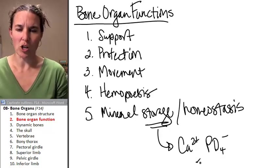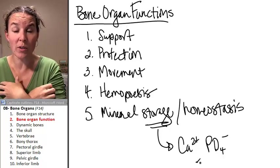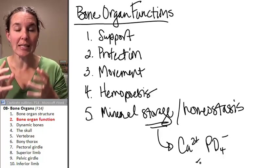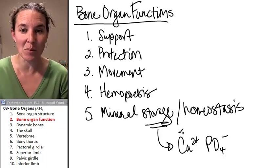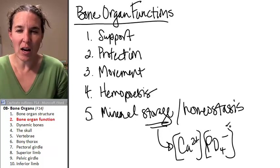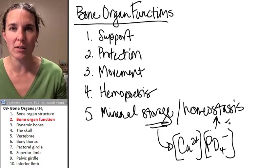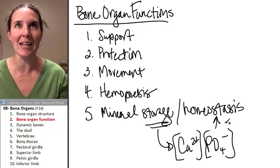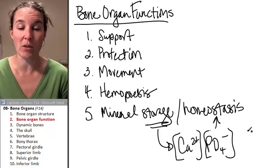Calcium ions and phosphate ions are stored in the bones. But the bone organ itself is involved in maintaining the proper concentrations of these ions in the blood. You've got to have a perfect balance of these minerals in your blood. And the bones play a dynamic role in making sure that you have the right concentrations of minerals in your blood.